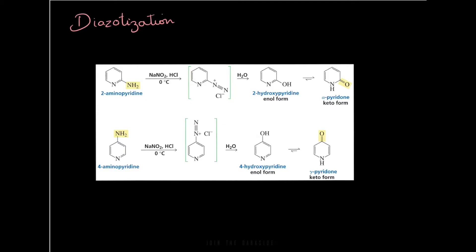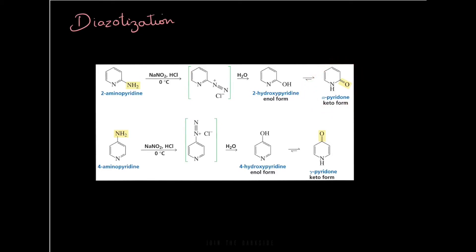The 2-aminopyridine is converted into a diazonium salt, which can be readily acted on by a nucleophile. The nucleophile replaces the diazonium part of the molecule, and the product is initially in the enol form because you have a double bond and an OH. Since the keto form is most stable, rearranging the hydrogens and double bond gives the keto form. When the amino group is in the fourth position, you get a gamma-pyridone, named because the carbonyl is at the gamma position relative to the nitrogen.